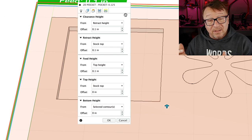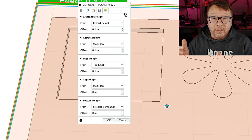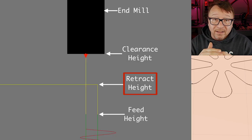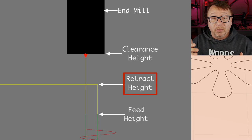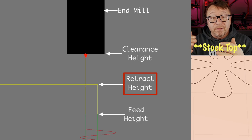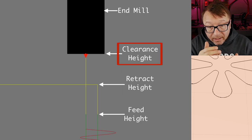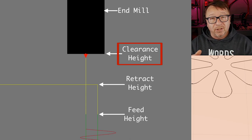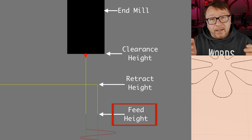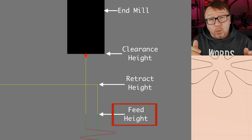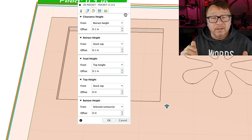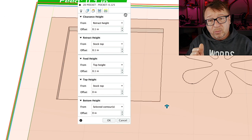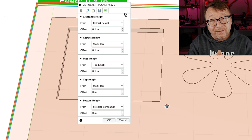For the other heights in Fusion 360, I generally just set them to the same value, as they are usually offsets from one another. For the retract height, this is the height the machine will move up to while it's going to do some rapid operations — I set it to 0.1 inches from the clearance height. The clearance height is where the machine moves to during a rapid to avoid objects like clamps. The feed height is where the machine moves while it's moving around inside an operation. I generally set all of these to 0.1 inches.